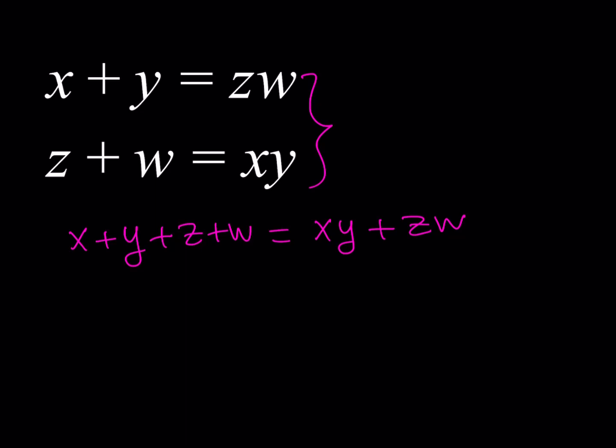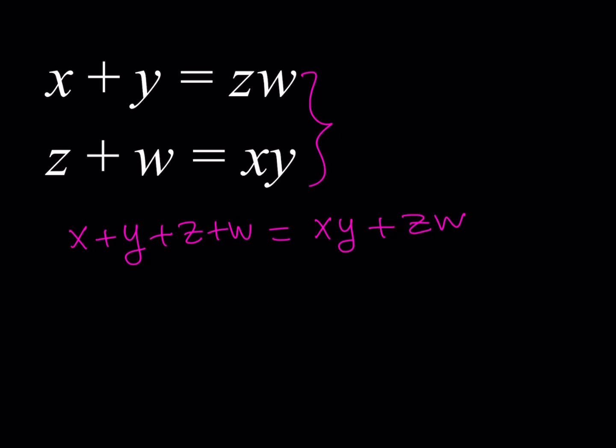So here's what we're going to do. We're going to put the x, y terms together. So let's go ahead and subtract everything from the left-hand side from the right-hand side, so that it looks like this: xy minus x minus y, plus zw minus z minus w, and then everything equals zero.